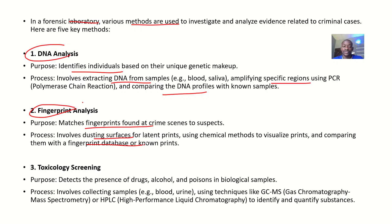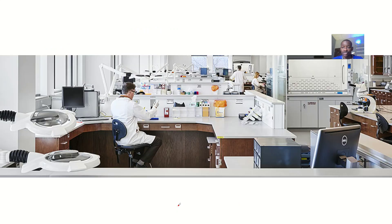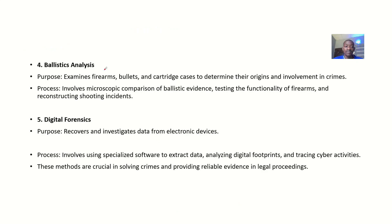The third method is toxicology screening, which is basically used to detect the presence of drugs, alcohol, and poisons in a biological sample. This involves collecting samples such as blood or urine, then using techniques like gas chromatography-mass spectrometry or high-performance liquid chromatography (HPLC) to identify and quantify substances.